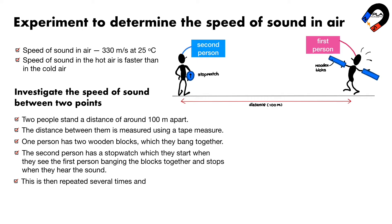This is then repeated several times, and an average value is taken for the time. The speed of sound can then be calculated using the equation. Speed is equal to the distance traveled by sound divided by time taken.